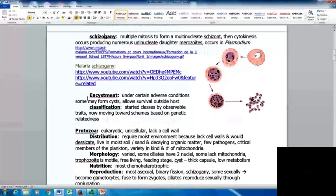Encystment will occur under certain adverse conditions where cells may form cysts, allowing them to survive outside the host. Classification in eukaryotes started by observable traits, but now we're moving towards classification schemes based on genetic relatedness. Sometimes they'll be a little bit different.